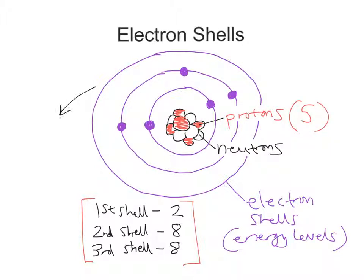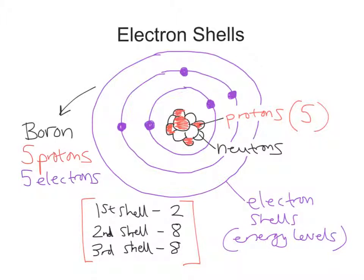So this would be an atom of the chemical element boron because we have five protons. So we've got five protons, but we also have five electrons. So there we've drawn an atom of boron.